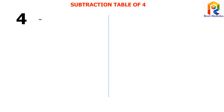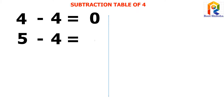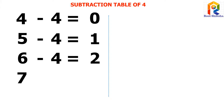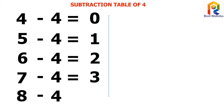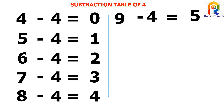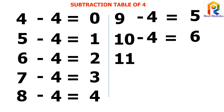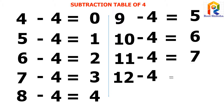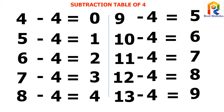4 minus 4 equals to 0. 5 minus 4 equals to 1. 6 minus 4 equals to 2. 7 minus 4 equals to 3. 8 minus 4 equals to 4. 9 minus 4 equals to 5. 10 minus 4 equals to 6. 11 minus 4 equals to 7. 12 minus 4 equals to 8.